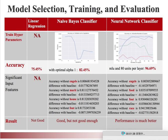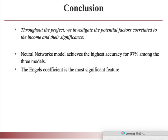We also studied the significance of different features by observing the reduced accuracy after removing each feature. For both models, the Engel's coefficient is the most important one. Finally, we conclude that the neural network model achieves the highest accuracy at 97% among the three models, and the Engel's coefficient is the most significant feature.